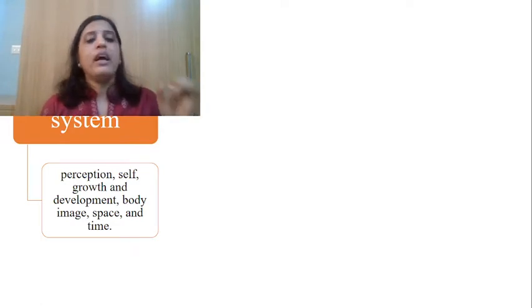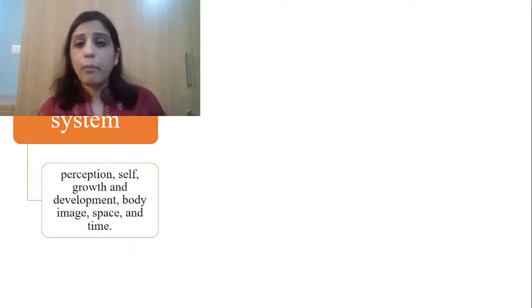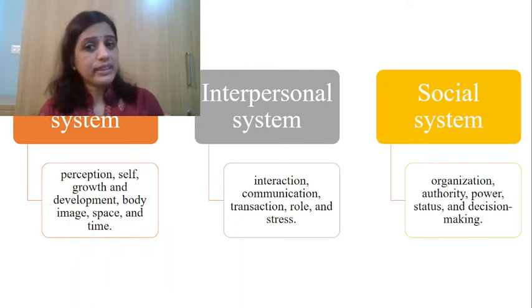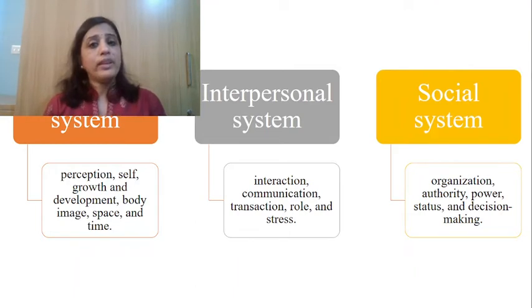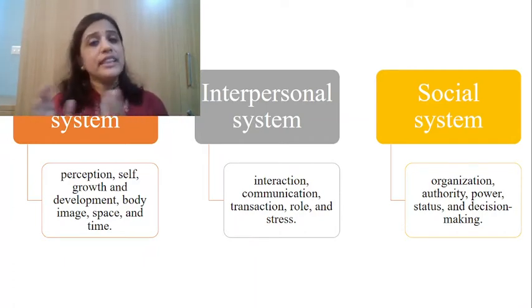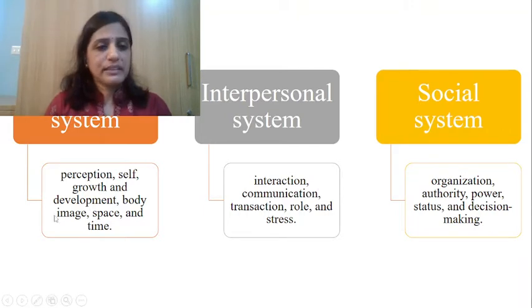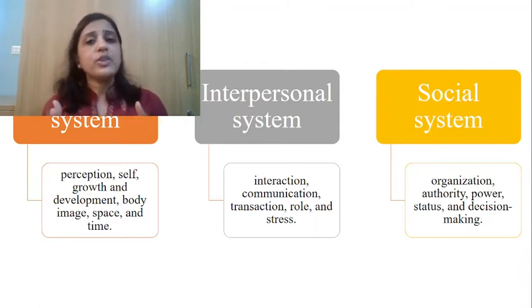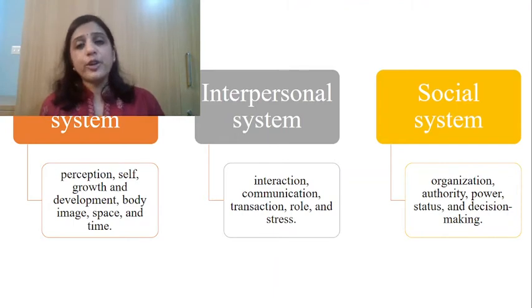The first system is the personal system — what is within oneself. Each of us has our own personal system. When we encounter a patient, King makes it clear that this person has a personal system with many things going on within them. The first concept is perception. According to King, perception is a process in which data obtained through senses and from memory are organized, interpreted, and transformed. For example, if someone has a bad image of nurses, it's because of data received through senses and memories — those data are organized and interpreted, forming their perception.